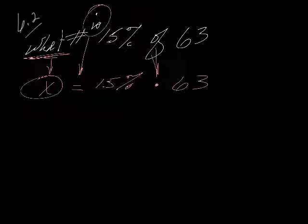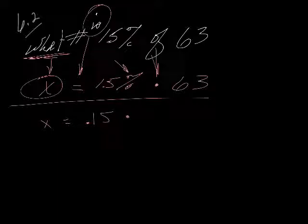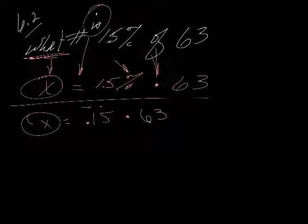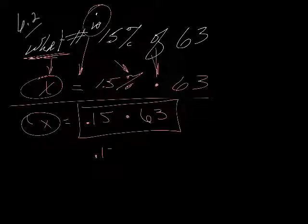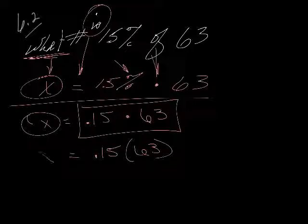Now this is where the last section, 6.1, being able to change things from a percent to a decimal is very handy. Because we cannot solve problems using a percent sign in the problem, we have to change it to a decimal. So I'm just going to change my 15%, move it over twice to get rid of my percent sign. So what number is 15% of 63? All I'm doing is multiplying 0.15 times 63 with my handy-dandy calculator, and I can find out what that number is. And that's all there is to it.